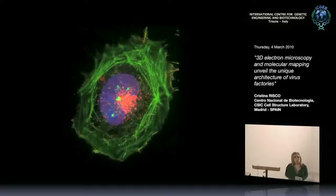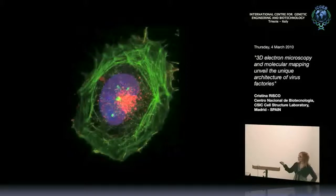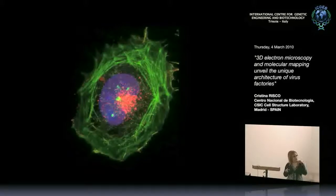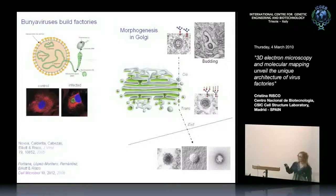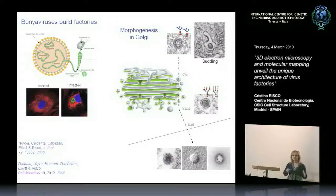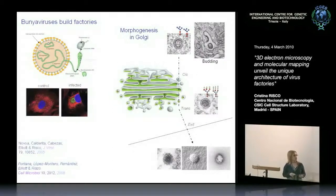This is a Bunyavirus. At high magnification you can see that the Golgi has changed dramatically — it's partly fragmented but concentrated in one area while actin has been removed. Bunyaviruses are the largest family of animal viruses, mostly arboviruses transmitted between mammals and humans by mosquito or tick bite. Some members of the family cause very serious pathologies such as encephalitis or hemorrhagic fever similar to Ebola, but from a different family.